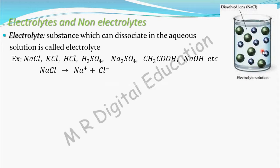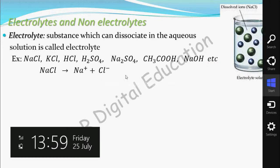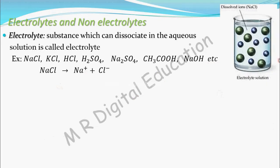The solution you now get is called an electrolytic solution. In the electrolytic solution of NaCl, Na⁺ and Cl⁻ ions will be present. So as soon as you put NaCl in water, it will get dissociated in the aqueous solution. The substance which can dissociate in the aqueous solution is called an electrolyte.